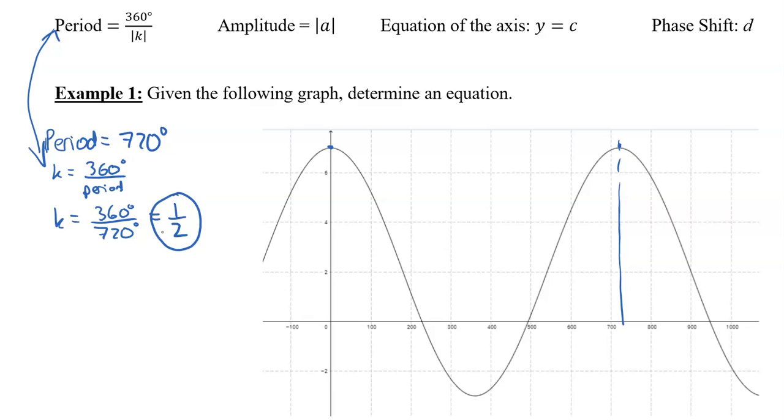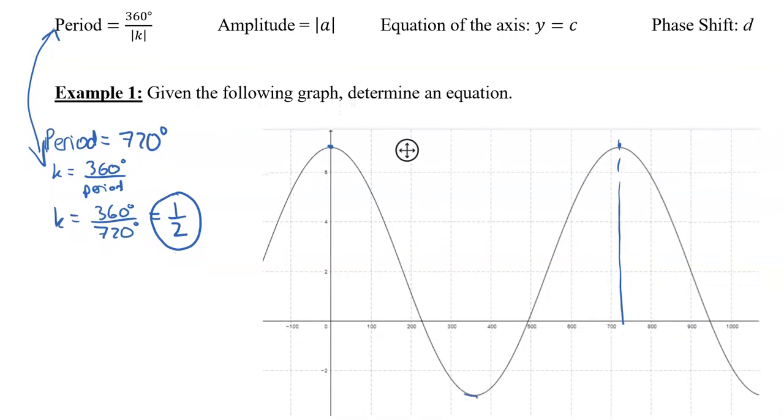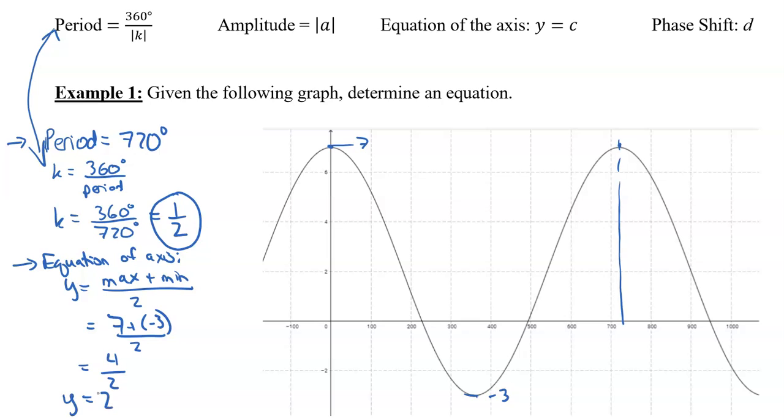And now I'm going to continue working on other things that I can tell relatively easily from the graph. One of the things that's relatively easy to tell from the graph is that I start at negative three down here and we're going all the way up here to seven. And so we could say, well, the equation of the axis is y equals the maximum plus the minimum, you add them together and divide by two. Well, in this case, the maximum of seven, and if you add negative three to that, dividing it by two, we get four over two, which means y equals two is the equation of the axis. That means that c equals two.